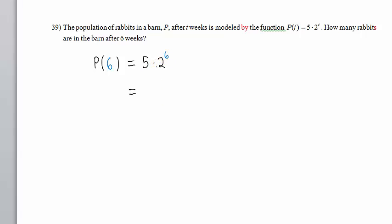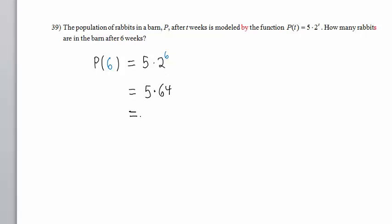So first, we compute 2 to the 6th power. That's 2 times 2 times 2 times 2 times 2 times 2: 4, 8, 16, 32, 64. And then we multiply by 5. 5 times 64 is 320. So there are 320 rabbits in the barn after 6 weeks.